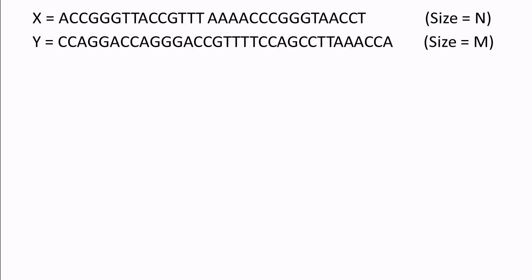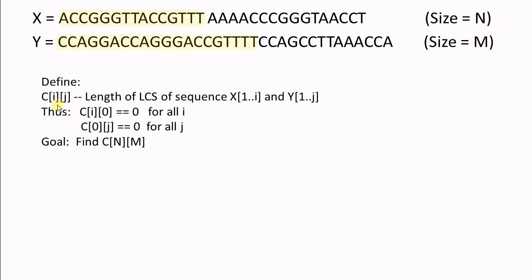Now let's try to use dynamic programming to solve this problem. The idea of dynamic programming is to solve a complex problem by breaking it down into smaller subproblems. Since the problem with size n and m is too complex, let's consider a problem with smaller size, i and j, where i is less than n and j is less than m.